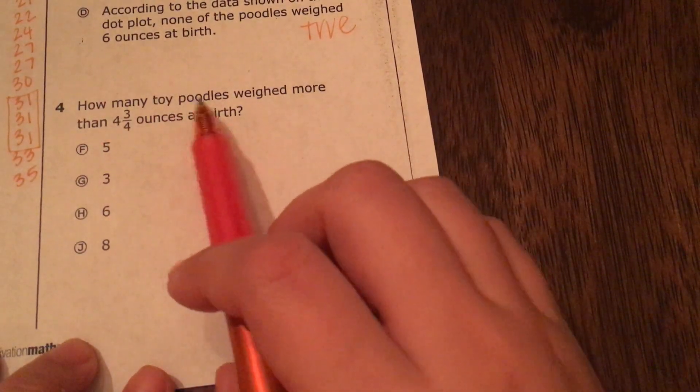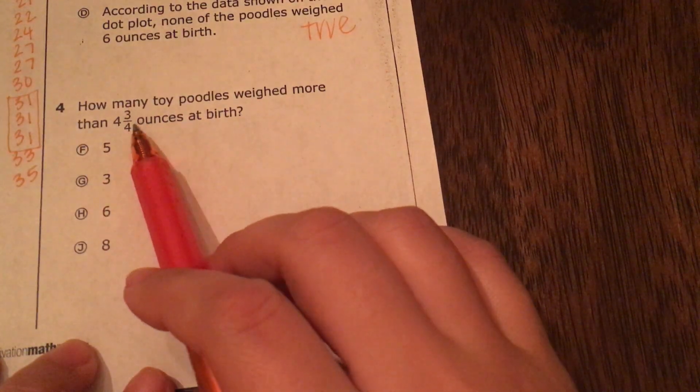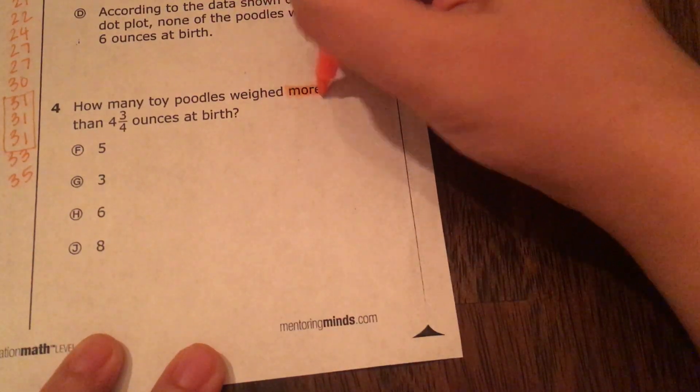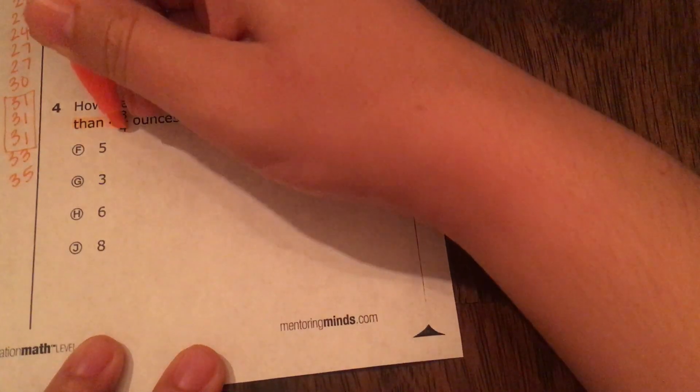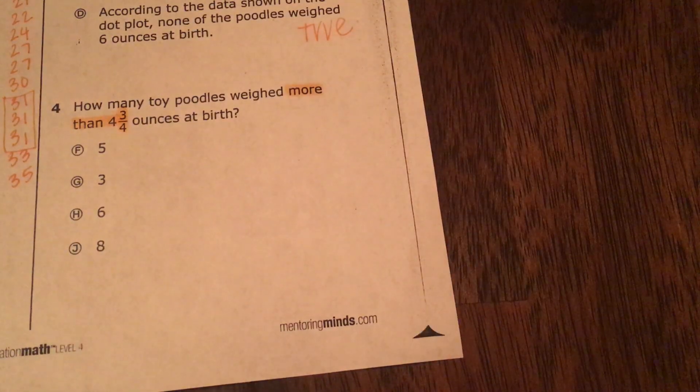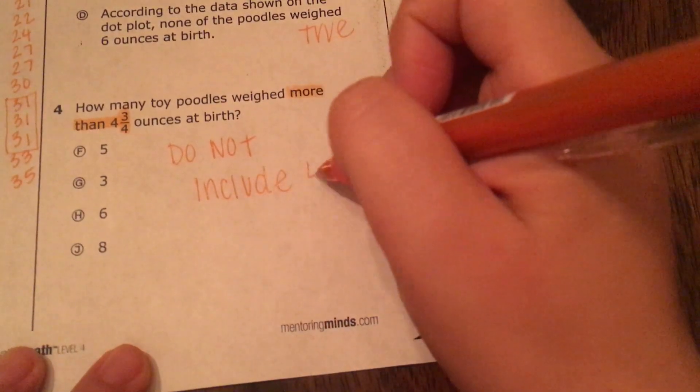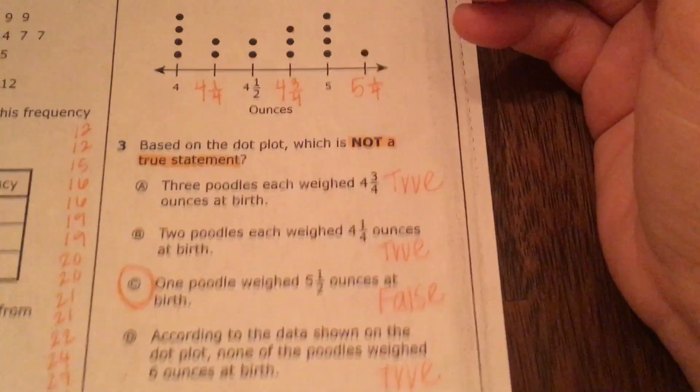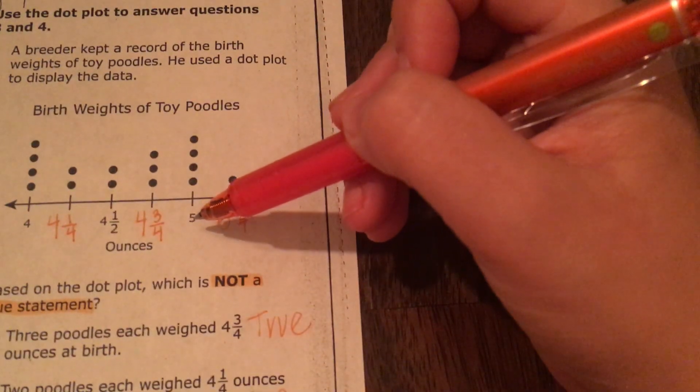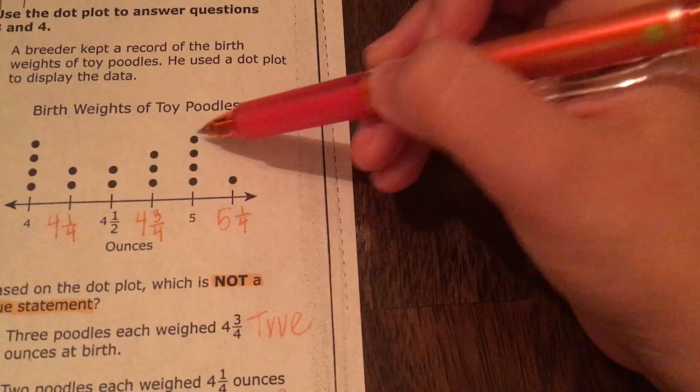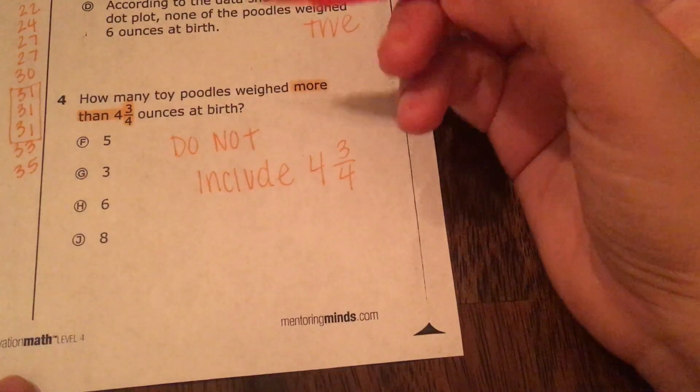Last one. How many toy poodles weighed more than four and three-fourths? So that means we want more than four and three-fourths. That means I'm not going to include four and three-fourths. We're not going to include that. All right. So that means we're only going to count the ones that are five and the ones that are five and one-fourth. So one, two, three, four, five. So five is my answer.